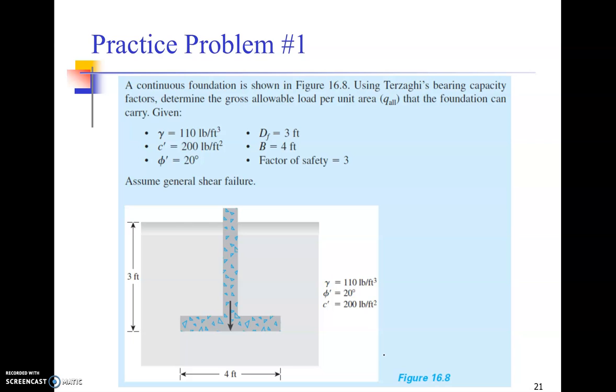Now we'll quickly see a problem, a very simple problem. A continuous foundation is shown in figure 16.8 underneath. Using Terzaghi's bearing capacity factors, determine the gross allowable load per unit area that the foundation can carry. The given factors are: the unit weight of the soil, depth of the foundation is three feet, the undrained shear strength of the soil is 200 pounds per square feet, width of the foundation is four feet, phi dash, the drained angle of internal friction, is 20 degrees.